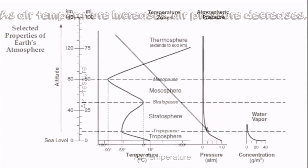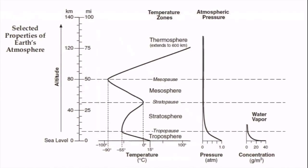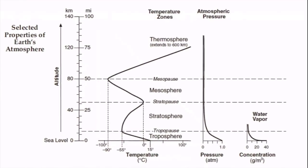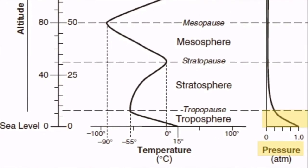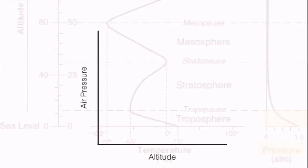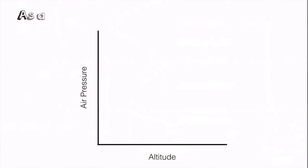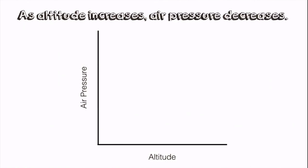Looking back at the atmosphere reference table diagram, the pressure in the troposphere starts out very high close to the surface, but air pressure decreases as you go up in altitude. So once again, as you go up in altitude, air pressure decreases — another indirect relationship.